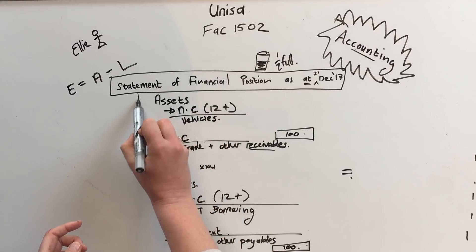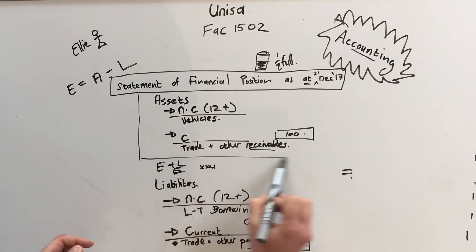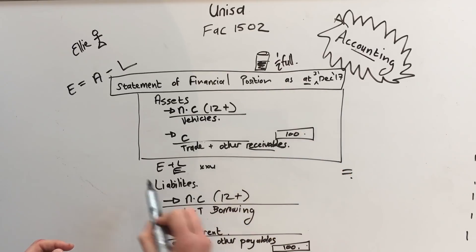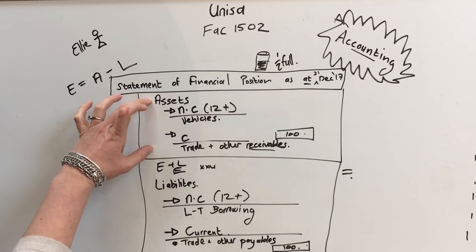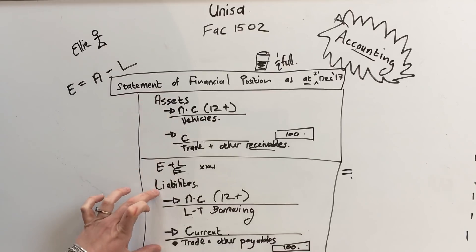So we have the top part which is assets. And then we have the bottom part which is equity and liabilities. Equity at the top and then you have your liabilities. For assets which are things we own already and it's things we use to make money, and for the liabilities which is money we owe people.